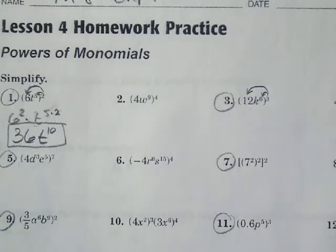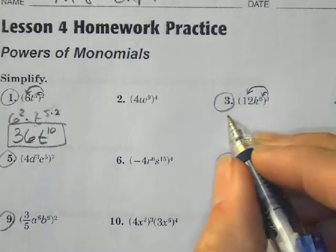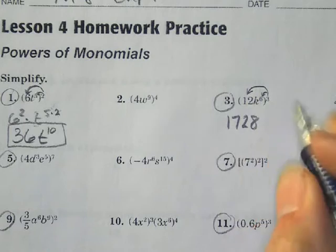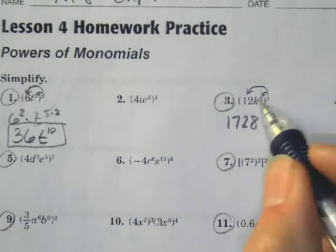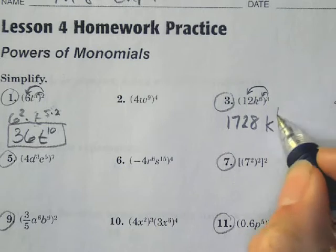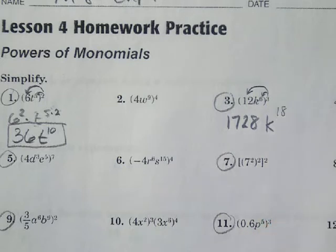Alright, 12 to the 3rd power in our notes here, 12 to the 3rd power is actually 1,728. That's what 12 to the 3rd power is. And k becomes k to the 6 times 3, which is 18. And that's my solution for that one there.